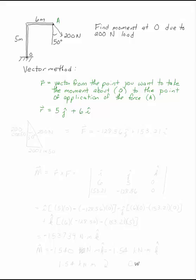To find F, we need to have that force in Cartesian form. So the 200 newtons goes on your 50 degree angle. Then the j component will be 200 cosine 50, and the i component will be 200 sine 50.